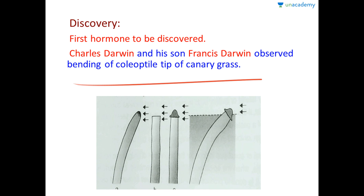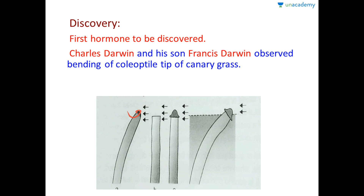I have put up a diagram with four pictures, each with their own significance. This is a coleoptile tip of the canary grass. All the auxin content is present at the tip. When unilateral light was applied — the arrow showing the direction of the light — the tip started bending towards the light. Then, the tip was cut off and there was no bending of the tip.